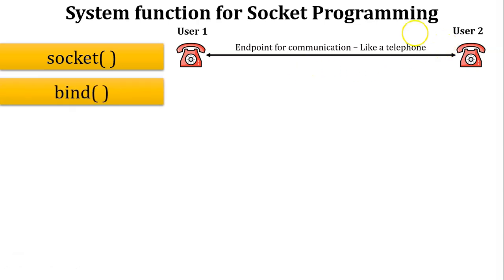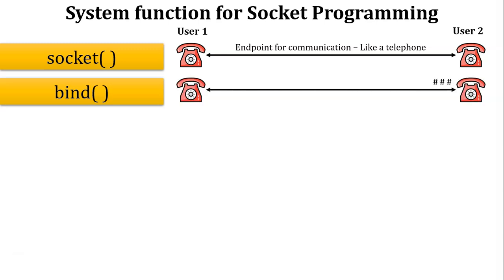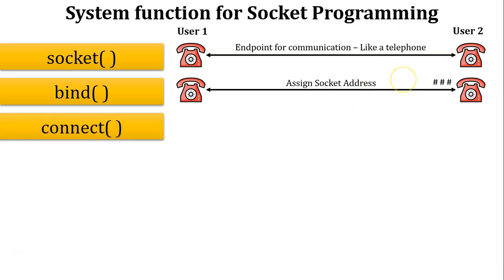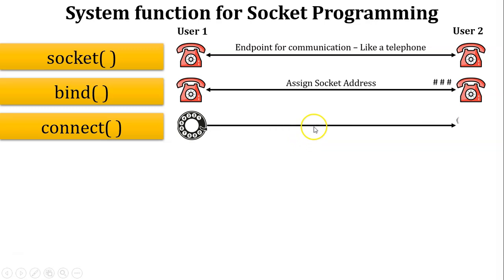The next function is bind. In telephone communication, a unique number is assigned to each telephone. Similarly, using the bind function we assign a unique socket address. The next function is connect — whenever user 1 wants to communicate with user 2, user 1 dials user 2's telephone number and tries to connect. Using the connect function, the client connects to the server port.